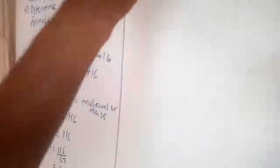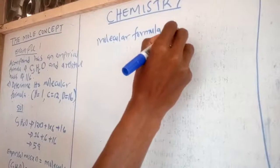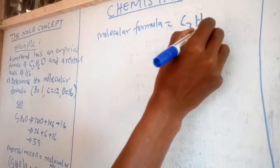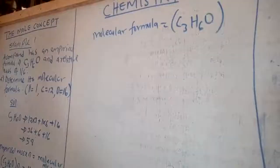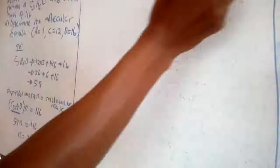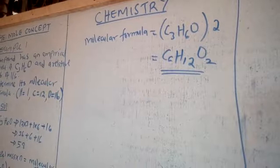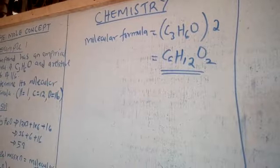After obtaining N=2, the molecular formula is given by the empirical formula C3H6O multiplied by 2. Opening the bracket: C becomes 6, H becomes 12, and oxygen becomes 2. That gives us the molecular formula C6H12O2.